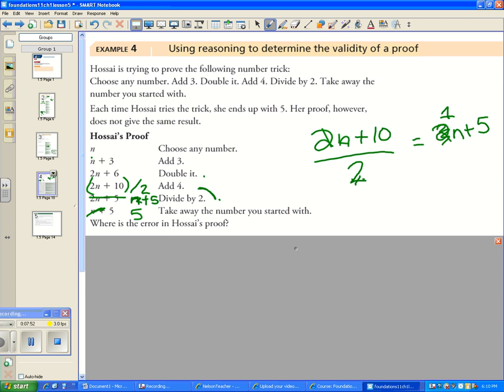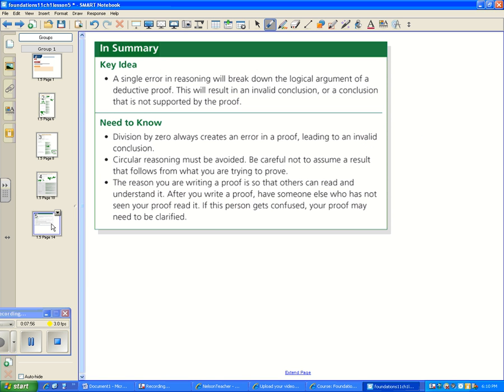So this section, just to review: A single error in reasoning will break down the logical argument of a deductive proof. This will result in an invalid conclusion or a conclusion that is not supported by the proof. Division by zero - things you're looking for - always creates an error leading to an invalid conclusion.